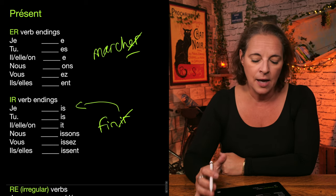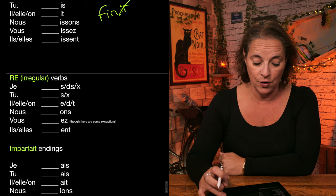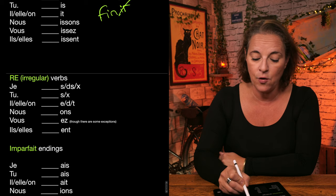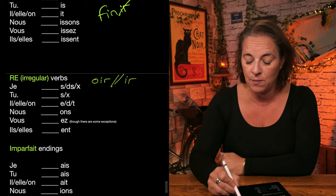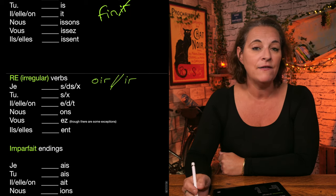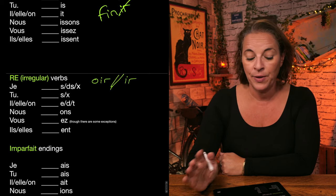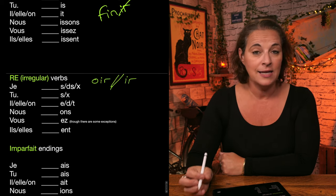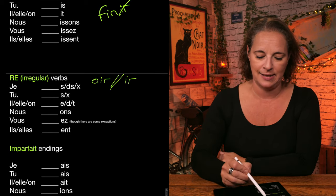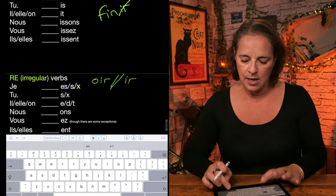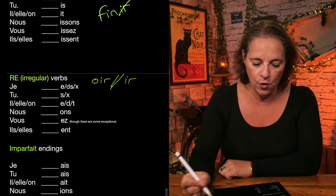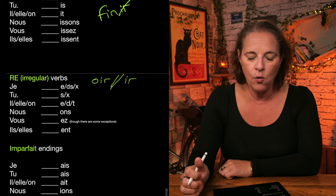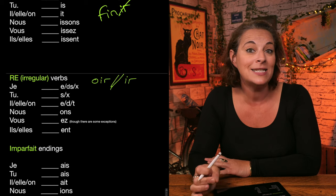But if we wanted to conjugate an RE irregular verb. But that can be an IR, there can be an IR verbs as well. And yes, there are IR verbs that belong to the irregular section. Then it becomes very hard, because the endings can vary immensely. Such as I at the end of je, or DS or X at the end of je. Tu has an S or an X at the end. Il, elle, on could have an E or a D or a T at the end.